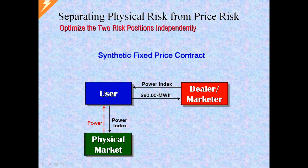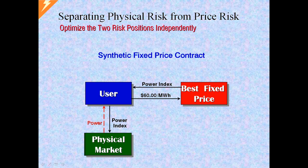But even if there was no pricing or credit advantage using swaps, the more compelling reason to choose swaps over physical hedging is its ability to separate price risk and physical risk into two independent transactions. This separation allows the hedger to optimize both risks. Transact with the best swap dealer — generally the one quoting the best price in the market and/or with the strongest credit rating. Separately, transact with the best power provider — the most reliable, most responsive, or perhaps lowest priced. Seldom, if ever, will the two best counterparties be the same company. In physical hedging, only one could be optimized. With the swap, both are optimized.